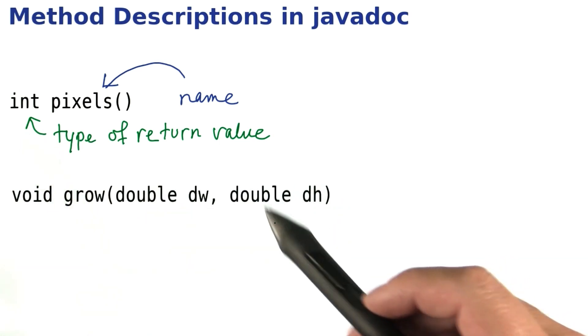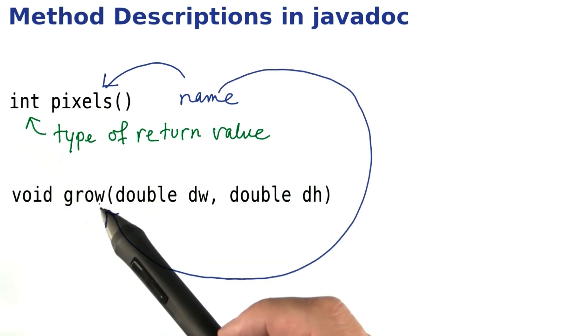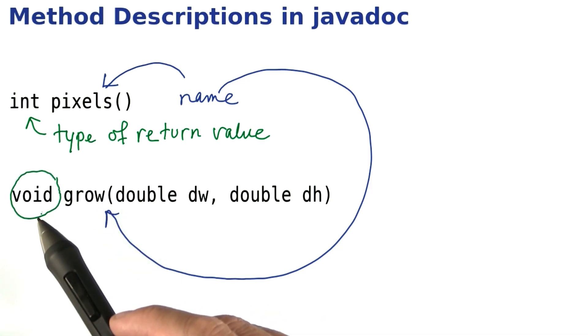Let's look at another example, the grow method. Again, the name is before the parentheses, and before that is the return type.